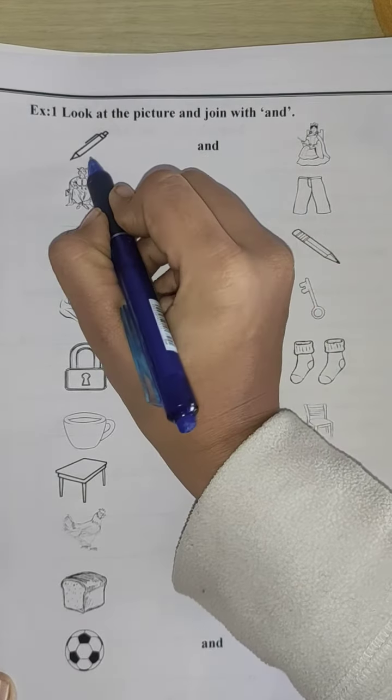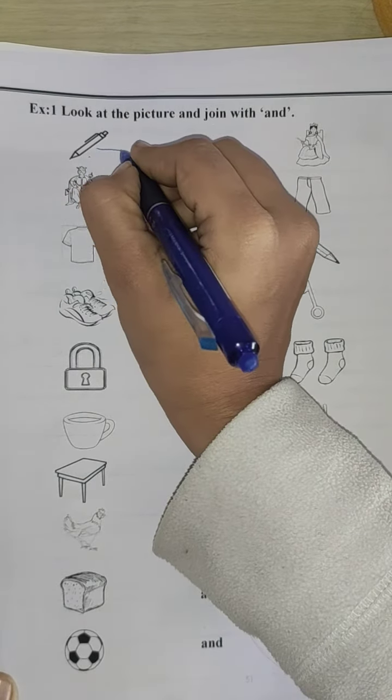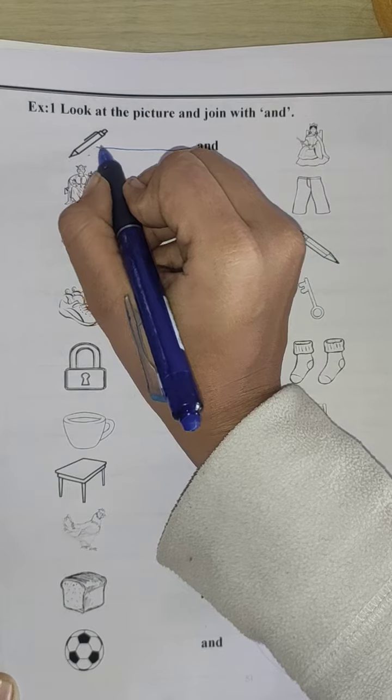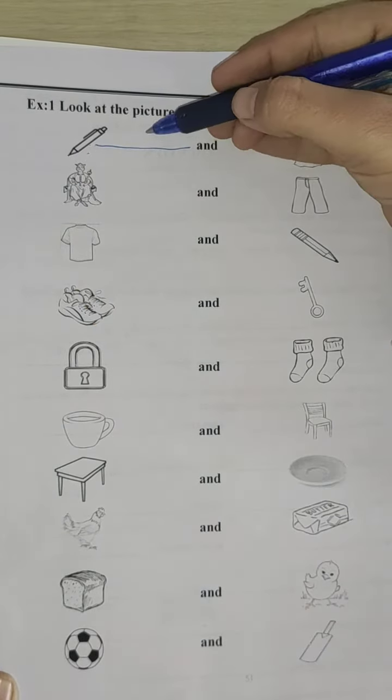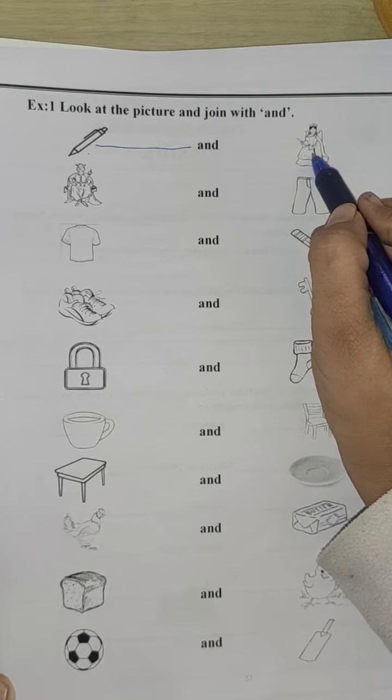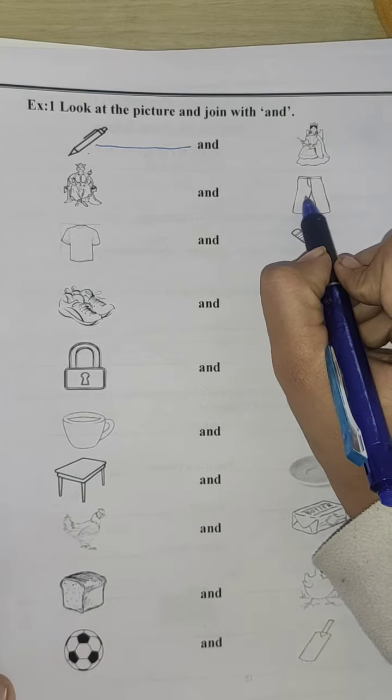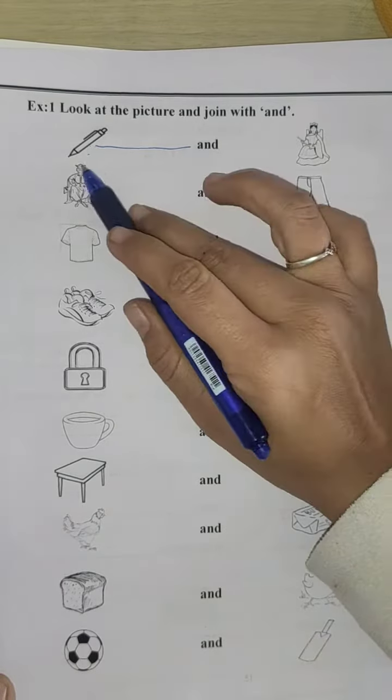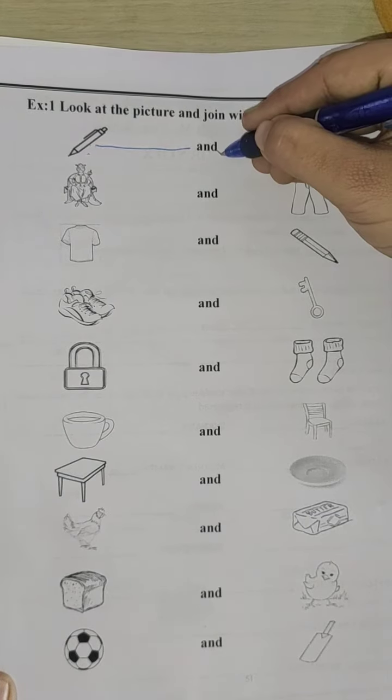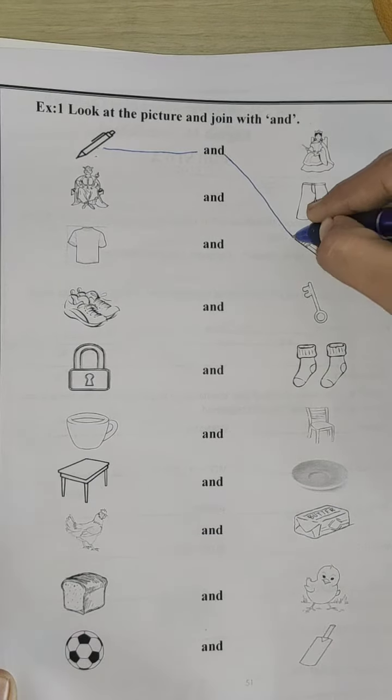Here, the first picture is of pen. Pen and you have to match pen with and. Now, what is the pair of pen? Queen, no. Pants, no. Pencil, yes. Pen and pencil. So, match and with pencil.